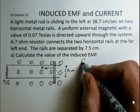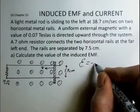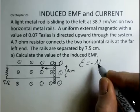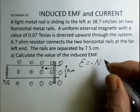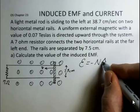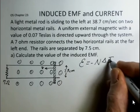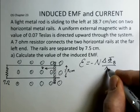We calculate EMF with Faraday's law. N is the number of turns of wire in the circuit, and that's only one for this problem. And then we need to somehow come up with the rate of change of the magnetic flux.